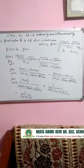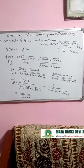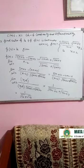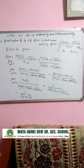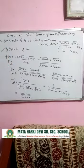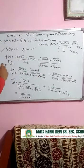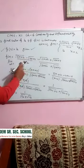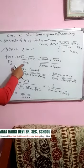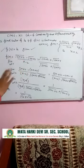So next question: find the value of k if f(x) is continuous at x equal to 2. f(x) given hai: root(5x plus 2) minus root(4x plus 4) divided by (x minus 2) for x not equal to 2, and k at x equal to 2. Function continuous diya hai, k find karna hai. First of all, f(2) is given as k. Ab limit x tends to 2 mein 2 fill karte hi denominator mein 0 aata hai, toh (x minus 2) ko remove karna padega.